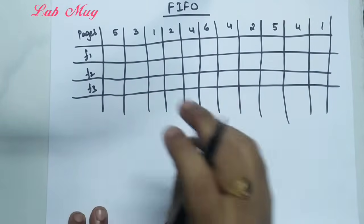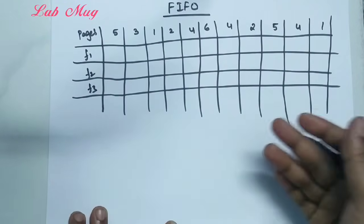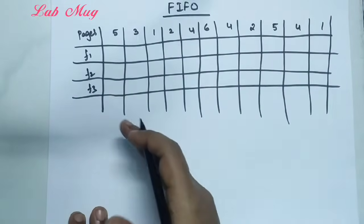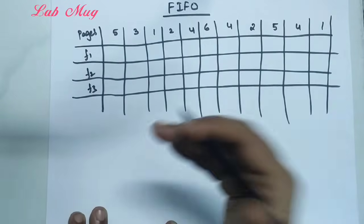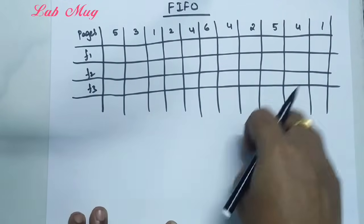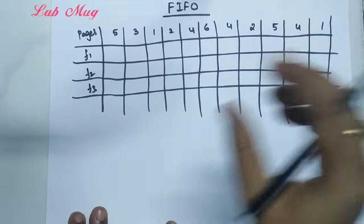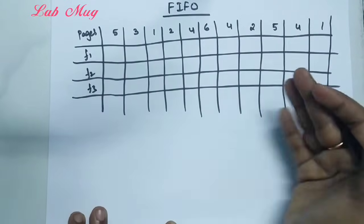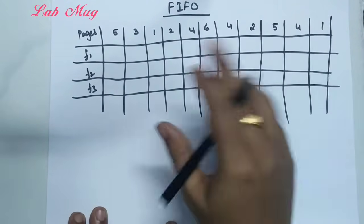We are taking the first page as 5. As explained in the previous class, left side is hard disk and right side is main memory. The hard disk contains the pages that the process needs to execute. If that page is not in main memory, that is going to be a page fault.